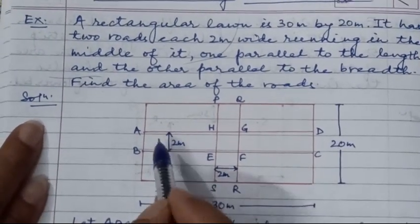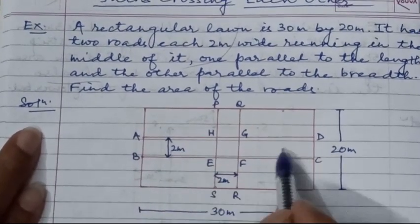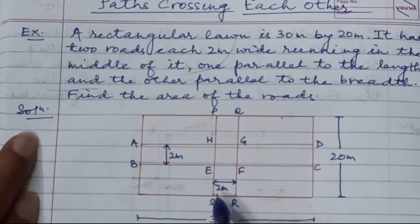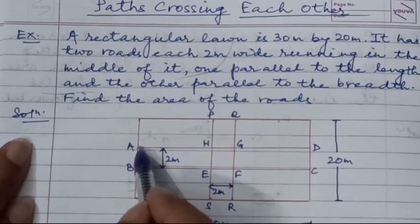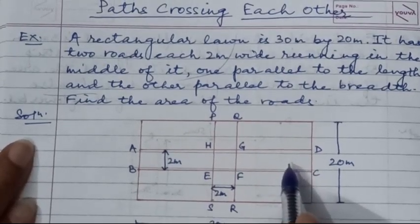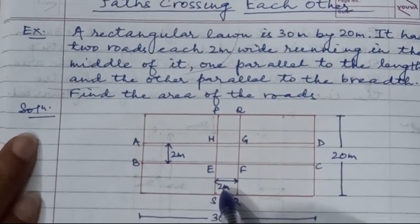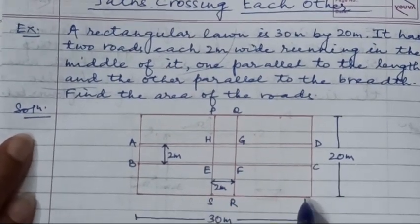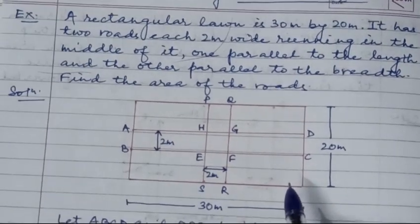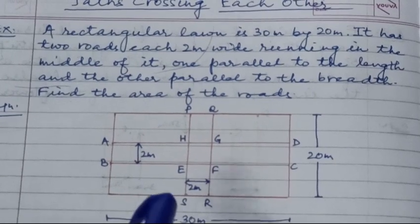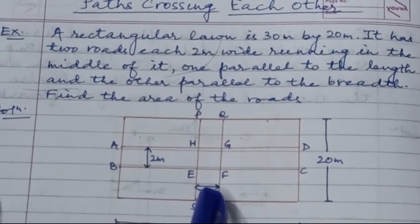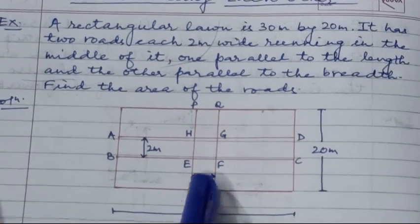This figure is the rectangular lawn whose length is 30 meters and breadth is 20 meters. The two roads are labeled ABCD and PQRS. These are the two roads crossing each other, and at the center there is a common portion EFGH which is common to both roads. We need to find the area of the roads.